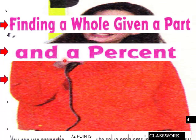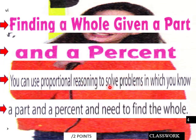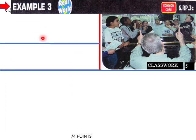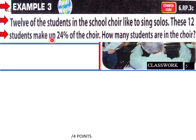So 120 is 6 percent of 2000 — the principal spent 6 percent of the money on keyboards. Now we move to finding a whole given a part and a percent, using proportional reasoning. Example 3: 12 of the students in the school choir like to sing solos.